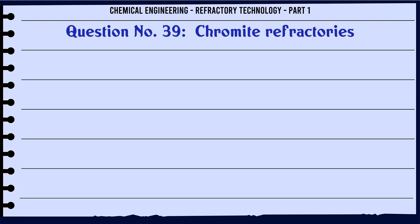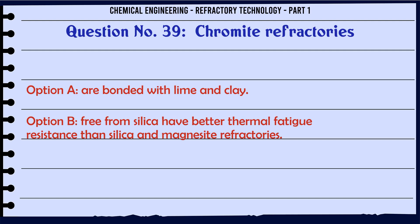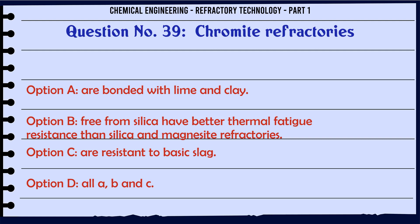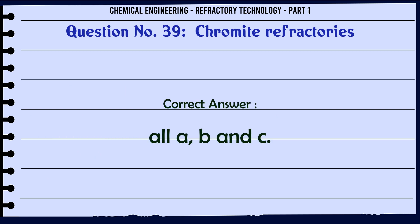Chromite refractories: A. Are bonded with lime and clay, B. Are free from silica and have better thermal fatigue resistance than silica and magnesite refractories, C. Are resistant to basic slag, D. All A, B and C. The correct answer is All A, B and C.